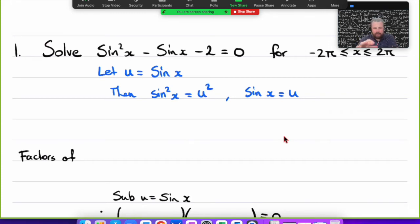If I let u = sin x, then sin²x is just u², and sine of x is just u. If I replace that into my equation, I've suddenly got an equation that says solve u² - u - 2 = 0. And we recognize that's a monic trinomial, and we know how to factorize that.